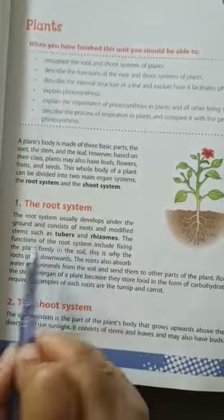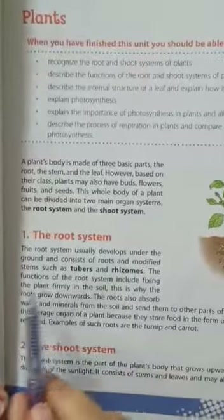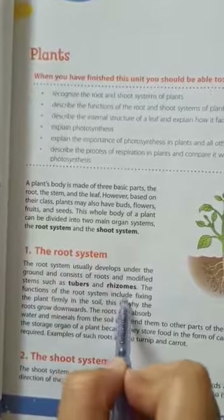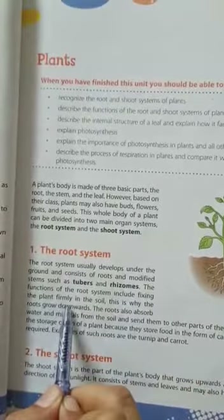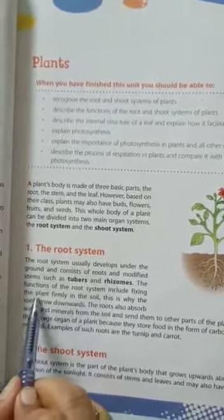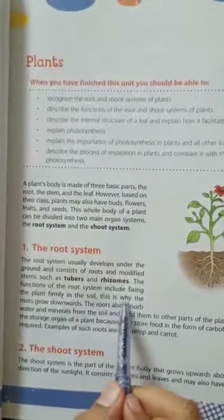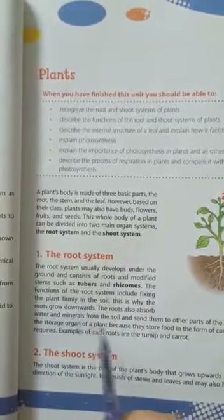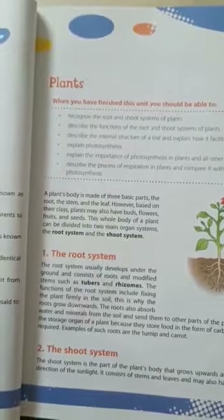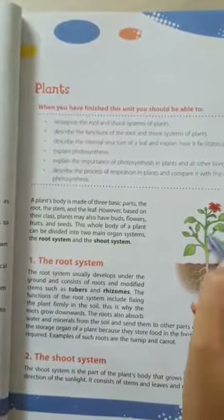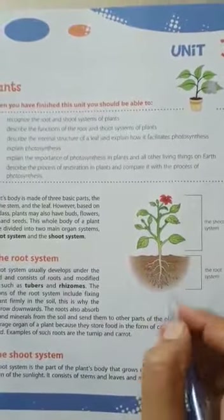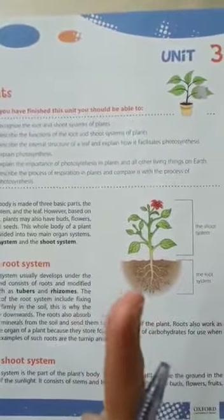The function of the root system — inka kaam kya hai, function means job — includes fixing the plant in the soil. Aap isko underline kar lijiyega. This is why the root grows downwards — to fix the plant firmly in the ground. Koi bhi cheez jad ke bagair stand nahin ho sakti, zameen mein neeche tak jaana padta hai so you can stand.